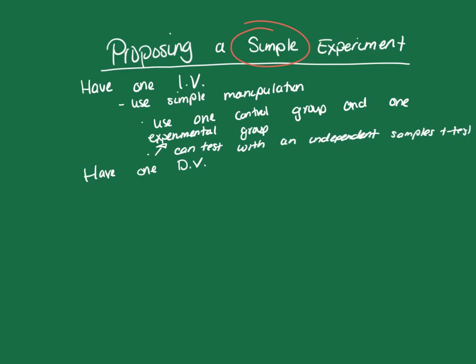If your IV is something you cannot manipulate, you are not doing an experiment. For example, I cannot do an experiment to see if gender impacts quiz scores because gender is not manipulable. Similarly, the dependent variable must be something you can measure — for instance, time travel cannot be a dependent variable because there is no known way to measure it. Be sure that you're doing something realistic when you propose your simple experiment.